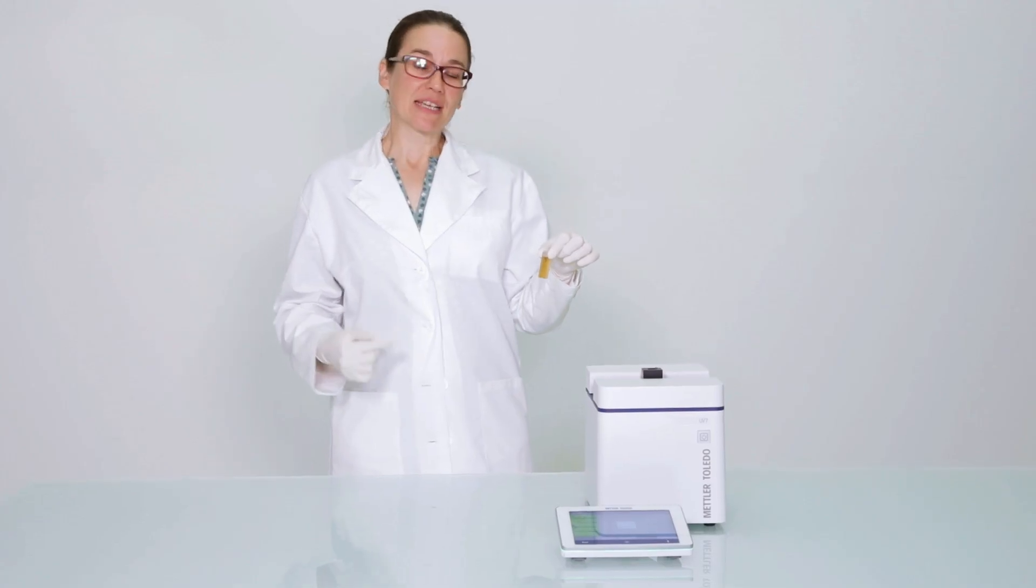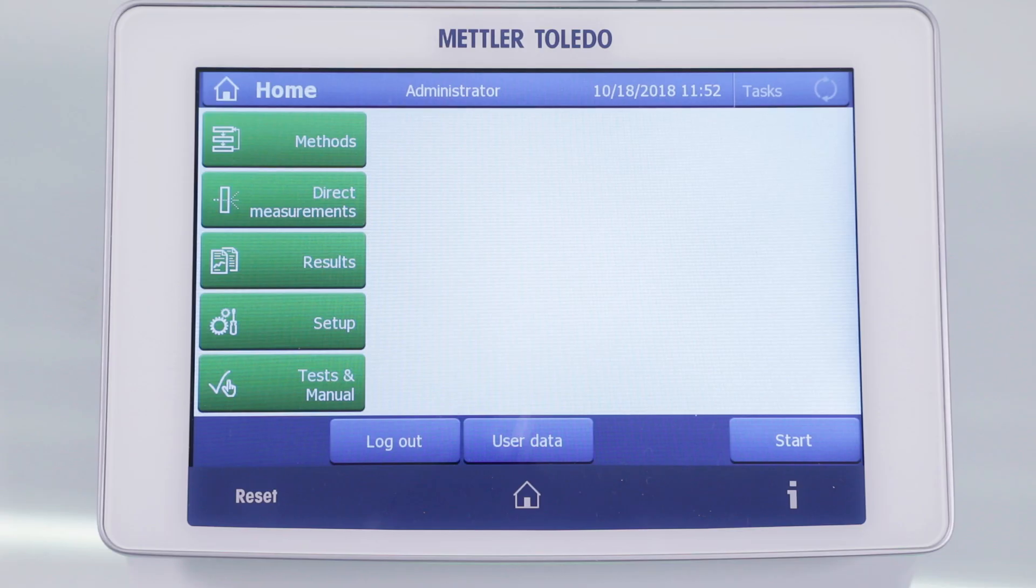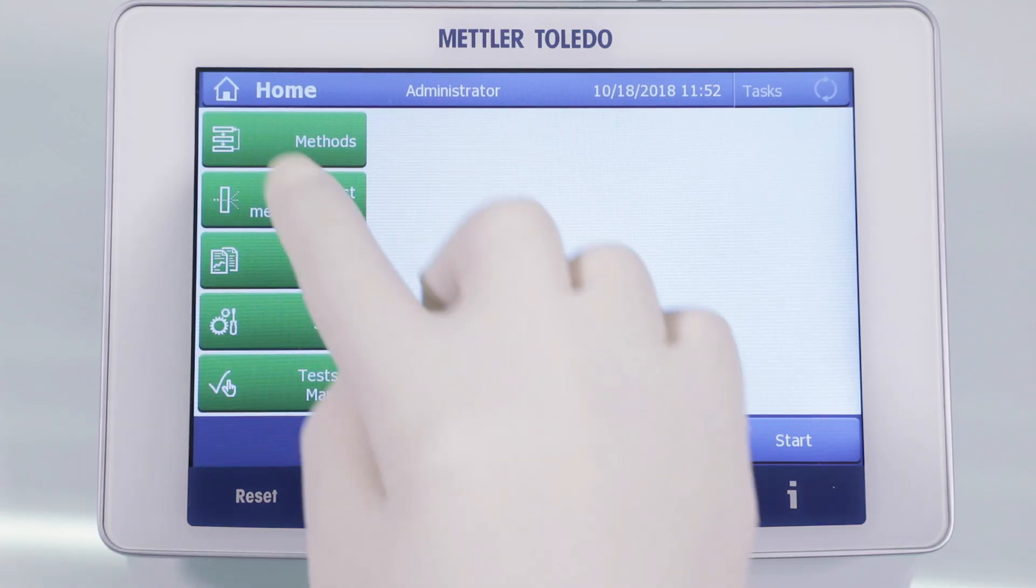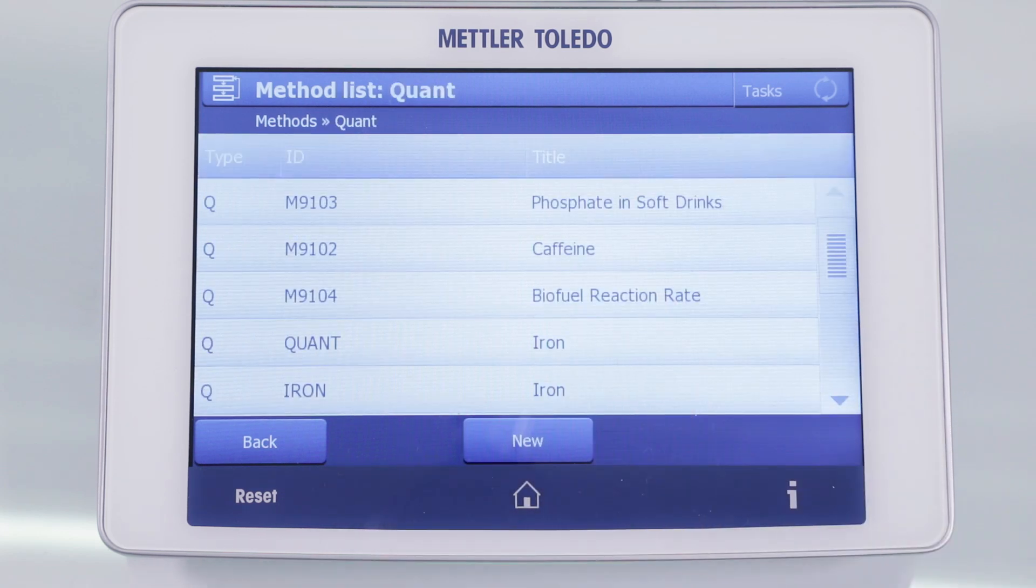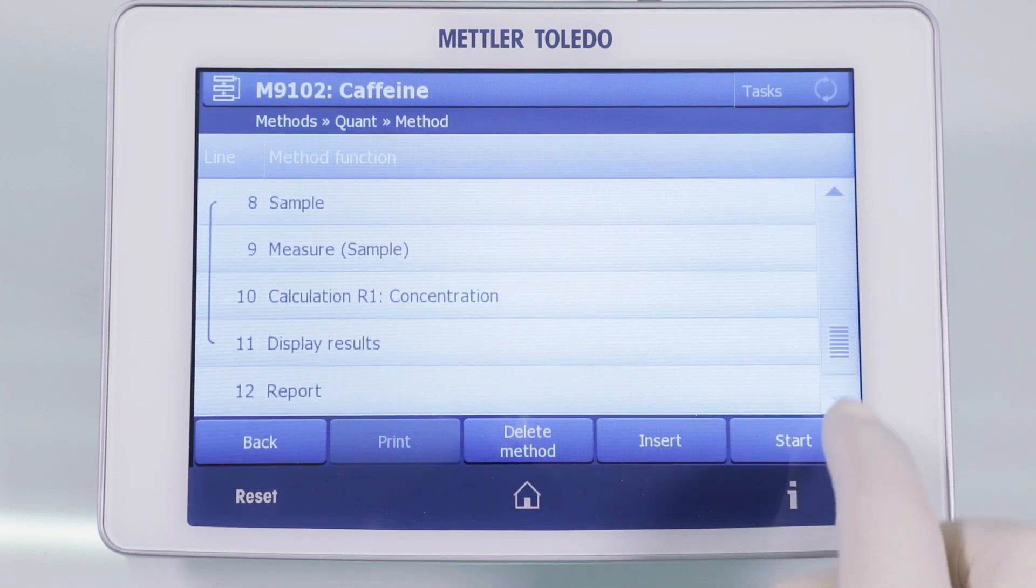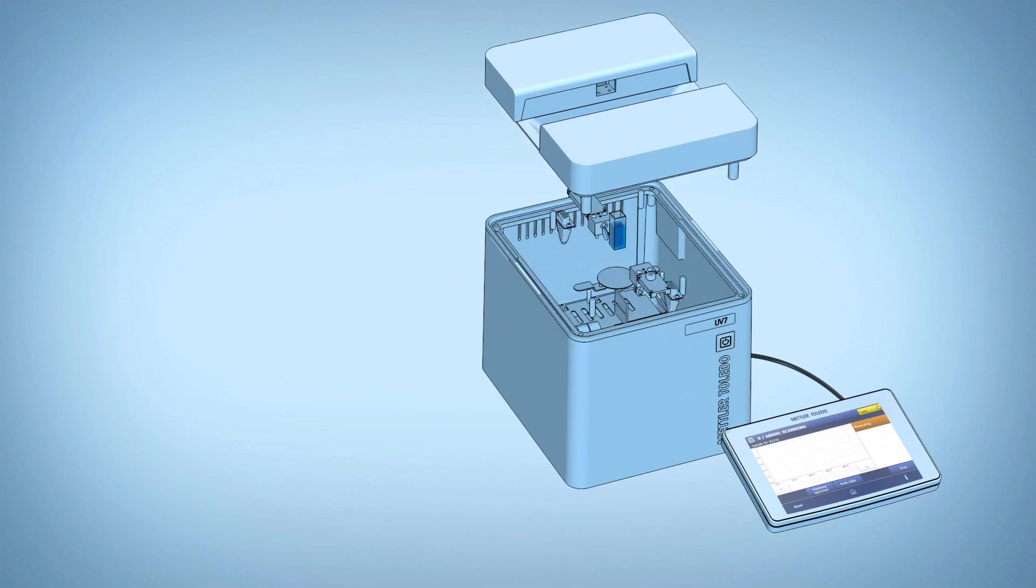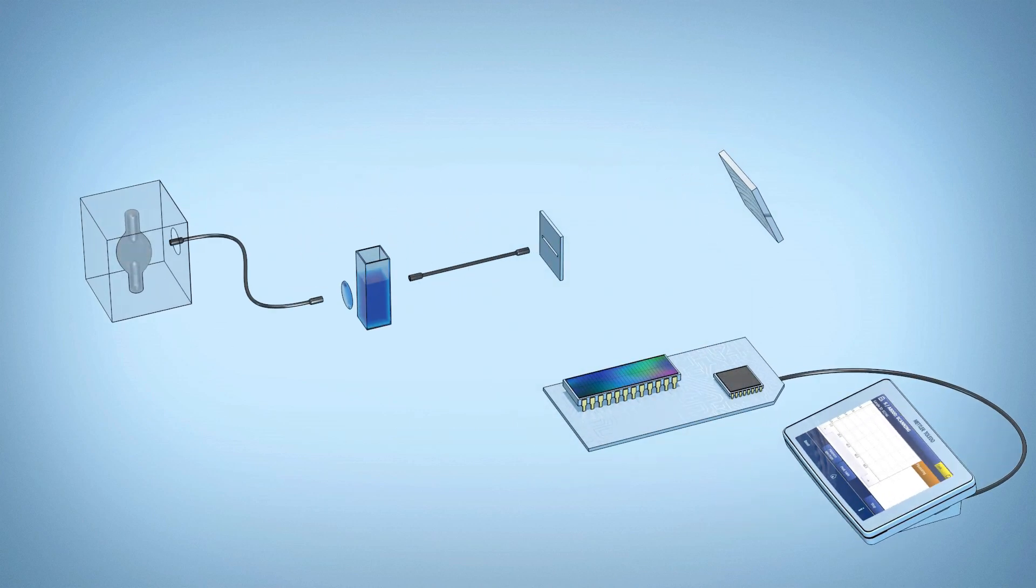First, we place the cuvette containing the sample into the spectrophotometer. Luckily for us, the Mettler Toledo UV-Vis spectrophotometer has a pre-programmed method for measuring caffeine concentration, which easily guides us through the required steps.